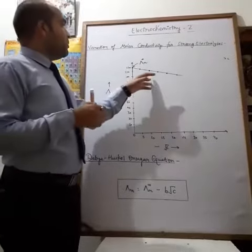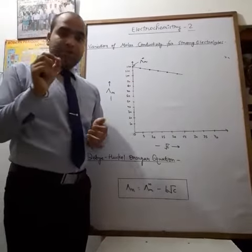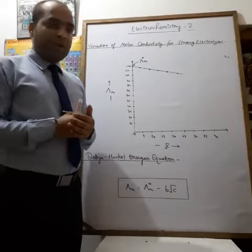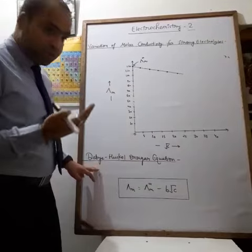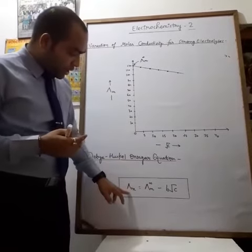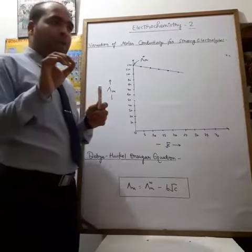The molar conductivity of strong electrolytes follows the equation known as the Debye Huckel Onsager equation, which is λM = λM∞ - B√C. Now, strong electrolytes are completely dissolved and completely ionized when dissolved in water. But what happens when the concentration for any